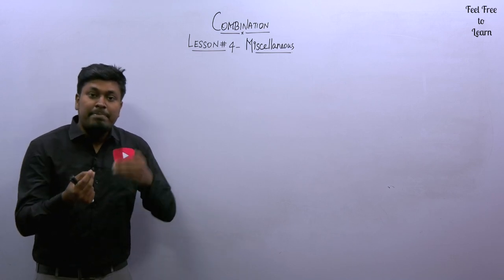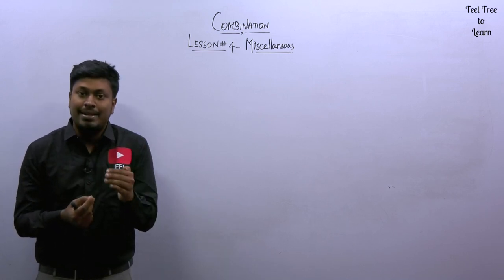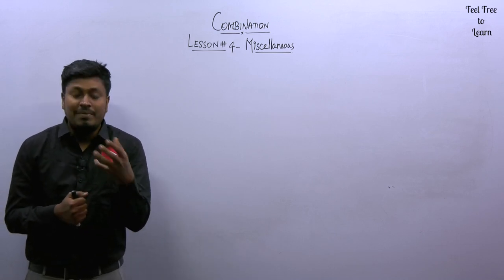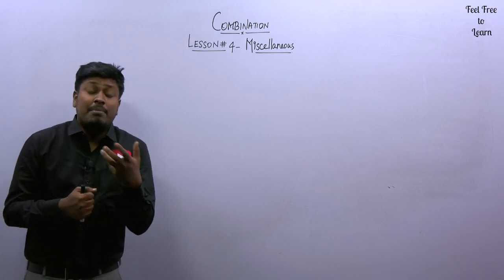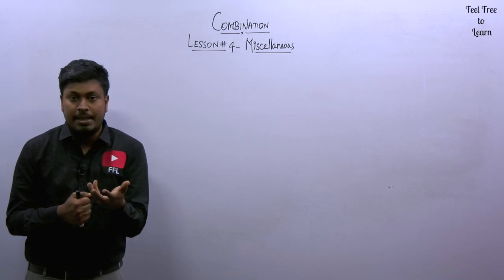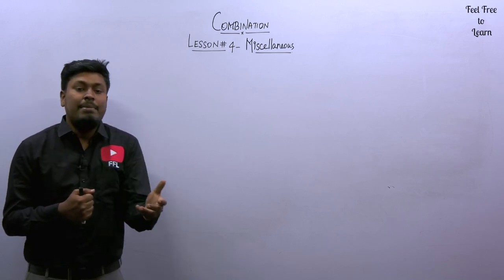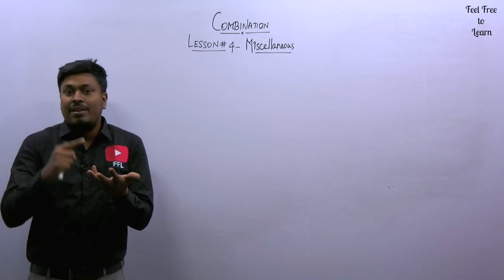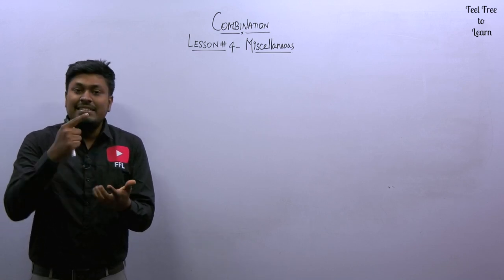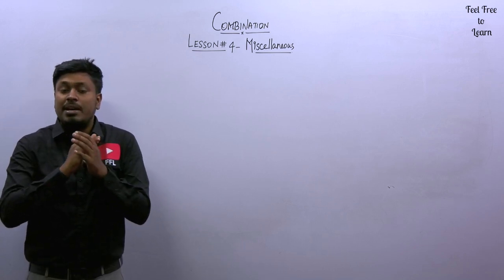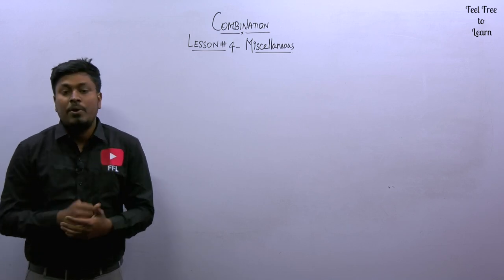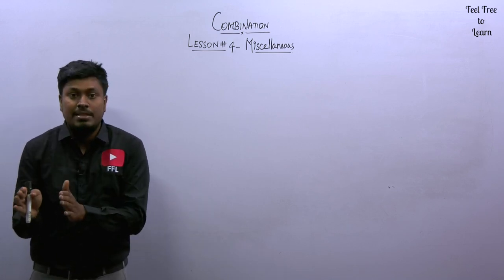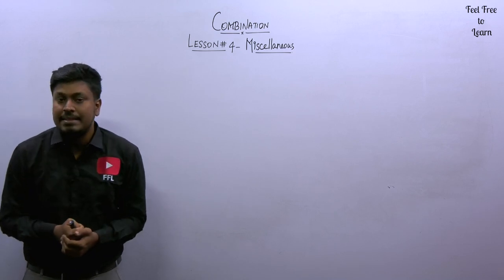Lesson number 3 is the most important lesson in the topic combination. In that previous lesson, we solved questions based on forming a committee of 5 or 3 members, covering concepts like either, or, neither, nor, none, at least, and at most. These are the most important concepts in the topic combination, and I solved all questions based on them in lesson number 3.